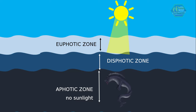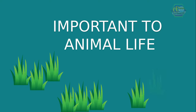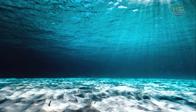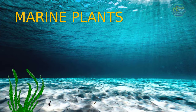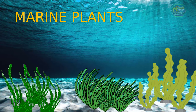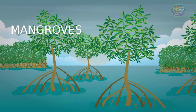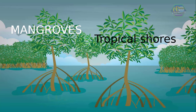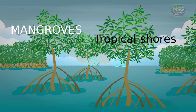Plants serve a very important purpose in the life of animals. Did you know that plants can also grow underwater? Some examples of marine plants are seaweeds, marine algae, and sea grasses. Mangrove trees, which live on tropical shores, are also part of the ocean ecosystem. These plants absorb carbon dioxide and in exchange give off oxygen for animals to breathe.